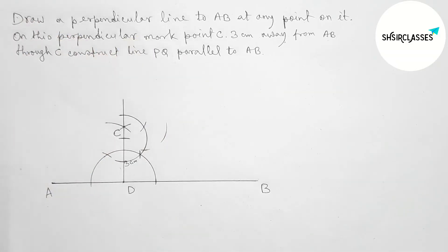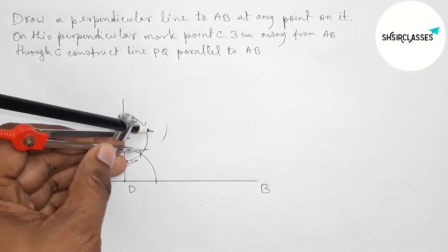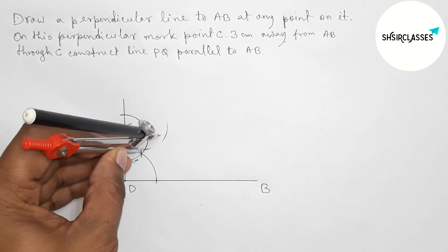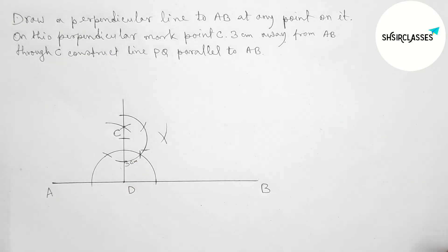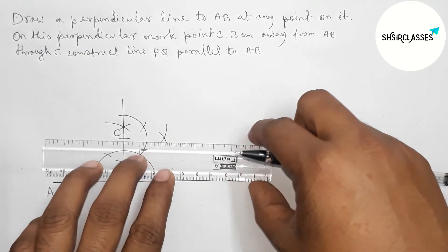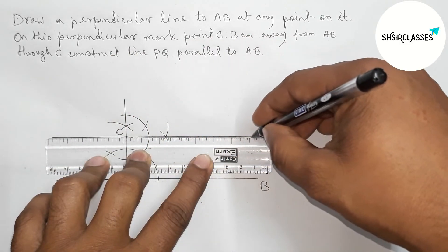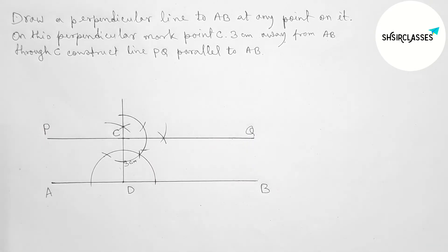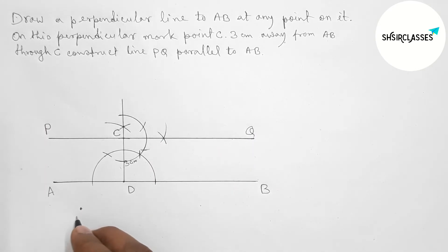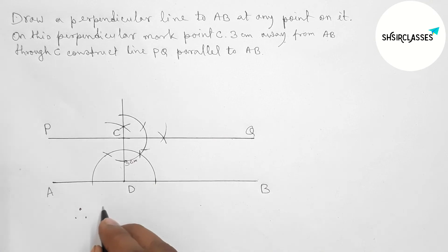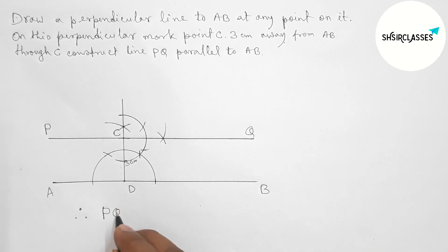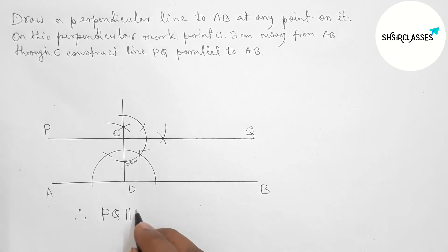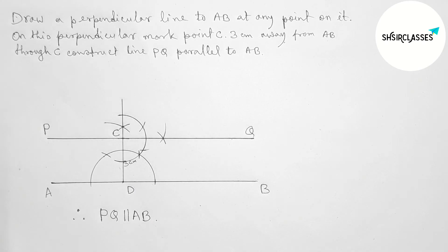Drawing an arc here, and again with the same length putting the compass here and cutting here. Next, joining this line, which is parallel to AB. Taking points P and Q here, so PQ is parallel to AB. That's all — thanks for watching. Please share it with your friends.